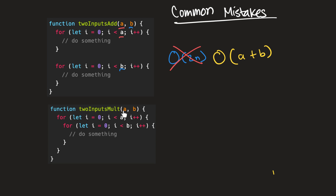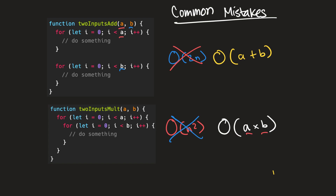Here we have a similar situation with two inputs, but this time the for loops are nested. A lot of people make the mistake of saying a function like this is O(n²), but that would also be wrong. O(n²) means that for every iteration of one input, we iterate through that same exact input. But here, when we have two separate inputs, for every iteration of one input we're going to iterate through the other input. So this is actually O(A × B), because we need to specify that these are two different inputs that could be of different sizes, and we need to make that visible in our complexity analysis.